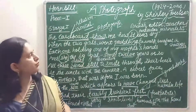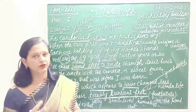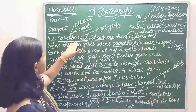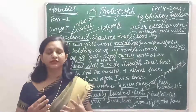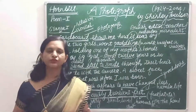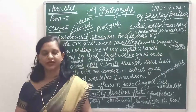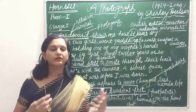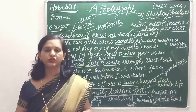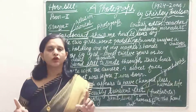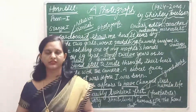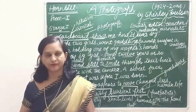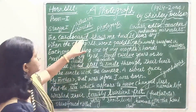In this first stanza, the poet describes her mother's childhood days. The word 'cardboard' refers to the stiff and thick photo paper on which old photographs were printed and pasted on cardboard, then framed to keep them safe for a long time. Now we live in a digital era and our photos are in soft copy, but in earlier times photos were printed on photo paper. So here, cardboard means the photograph.